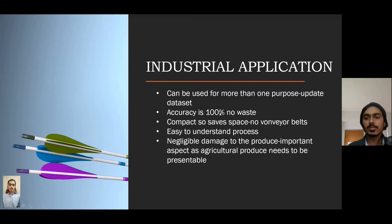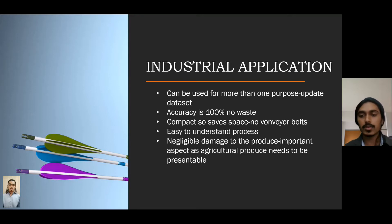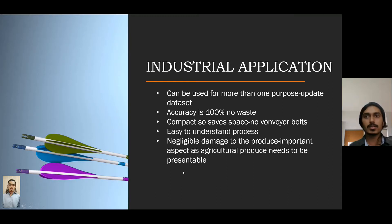The industrial applications: this can be used for more than one purpose by updating the data set, as mentioned before, so this is a very viable process. The accuracy is 100% with no waste when testing was done. The compact design saves space as no conveyor belts are used. The process of installation and sorting is easy to understand, so it can be used by anyone. And the damage induced on the product is kept to a minimal, which is an important factor as we are dealing with agricultural produce — when people buy produce, they tend towards products with less damage that are fresh.